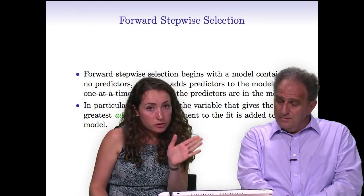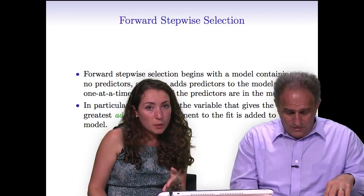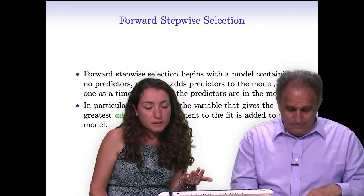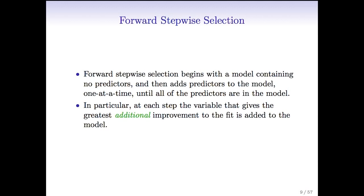Now we're going to talk about two stepwise methods — forward and backward stepwise. These are really pretty similar, with just one fundamental difference: whether you're starting with a model with no predictors or a model with all predictors. In forward stepwise selection, we start with a model that contains no predictors — just a model with only the intercept, what we call the null model M0. Then we add predictors to the model one at a time until all predictors are in the model.